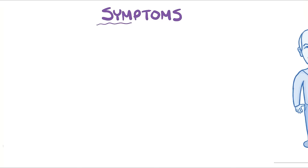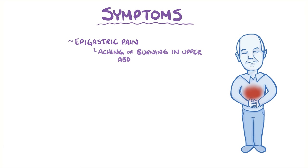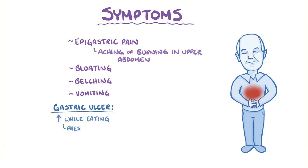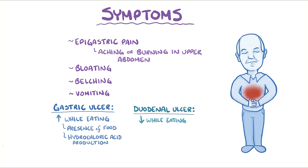The main symptom of gastric and duodenal ulcers is epigastric pain, which is an aching or burning in the upper abdomen. Other symptoms are bloating, belching, and vomiting. Classically, gastric ulcer pain increases while eating a meal due to the physical presence of food as well as the hydrochloric acid production stimulated by eating. Duodenal ulcer pain, on the other hand, decreases while eating. This might be why gastric ulcers are associated with weight loss, while duodenal ulcers are associated with weight gain.